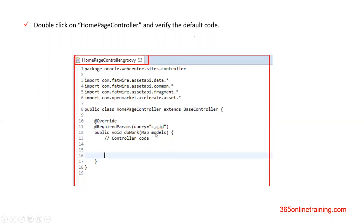Open the controller and verify the default code, which would be generated automatically. When you create a new controller, this would be the default code you get. Since the name of our controller is homepage controller, the class name would be the same. This controller extends by default the base controller, which defines the methods. As you can see, we have a doWork method which has two parameters: C and CID as required parameters.